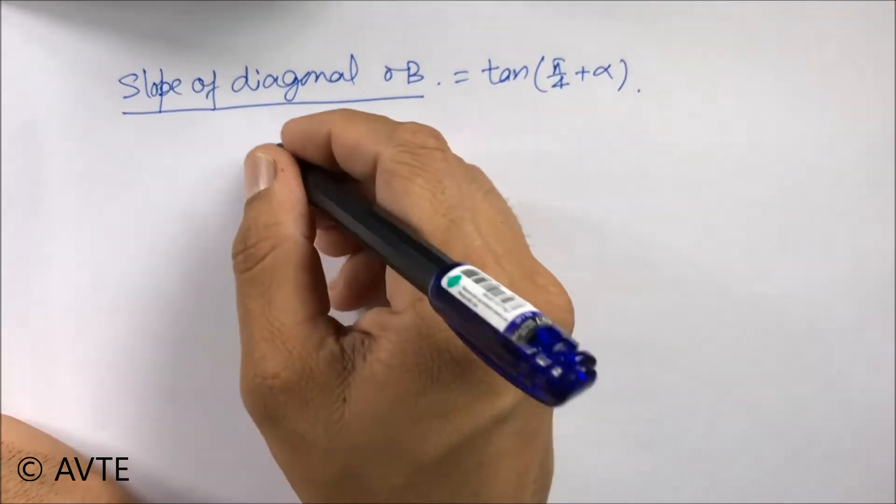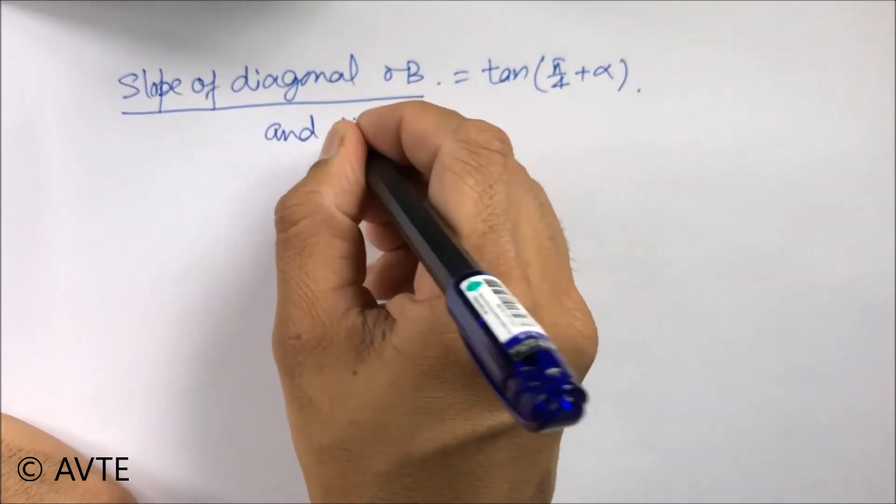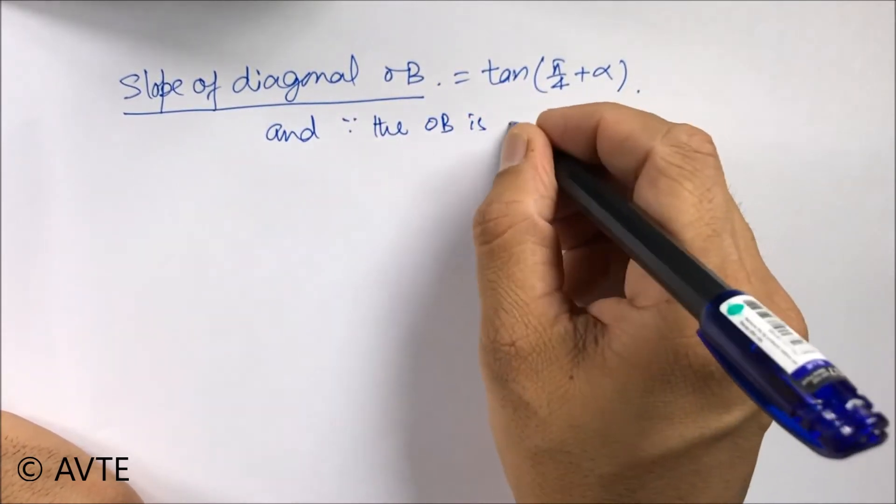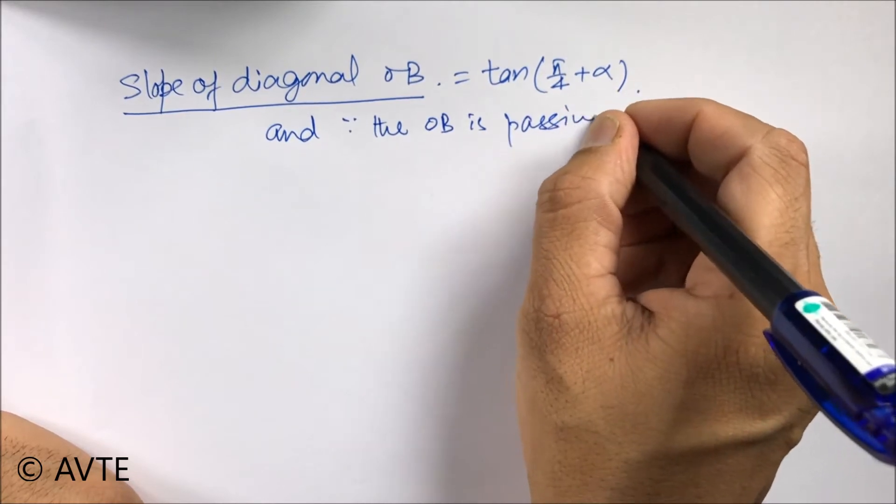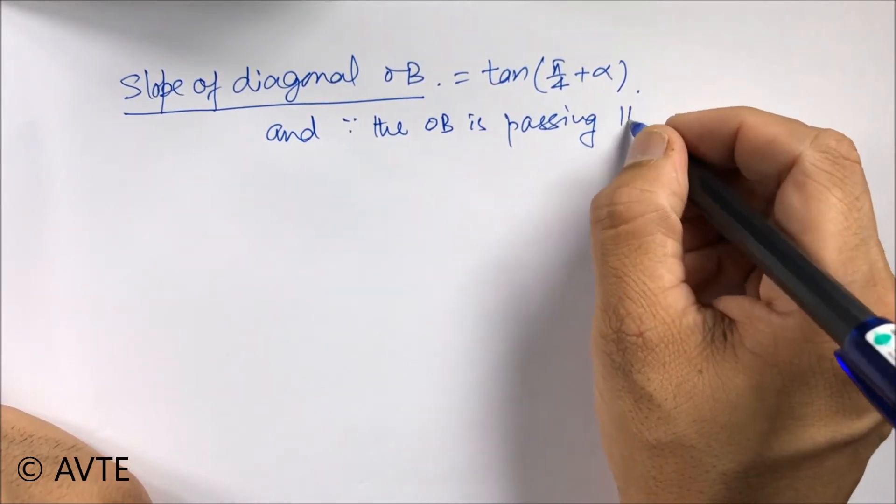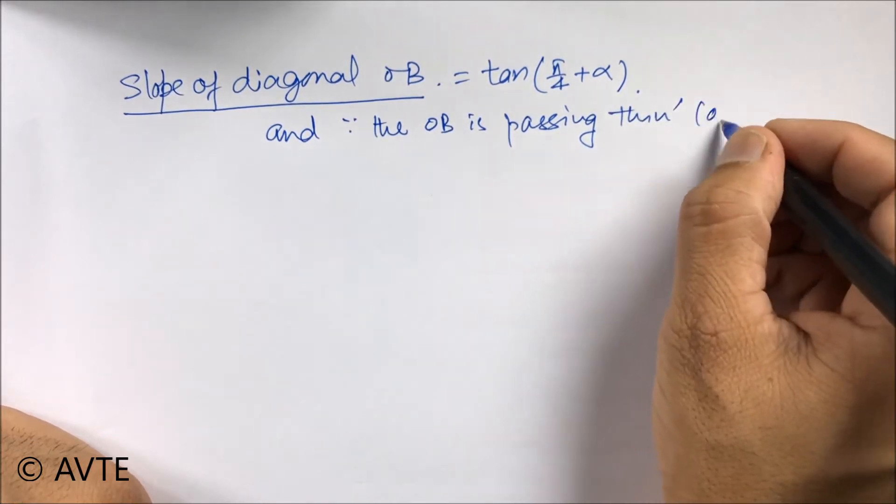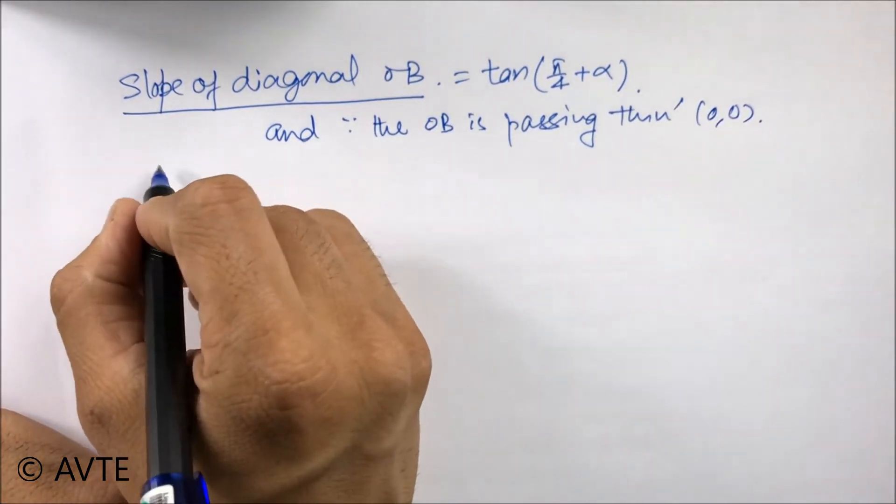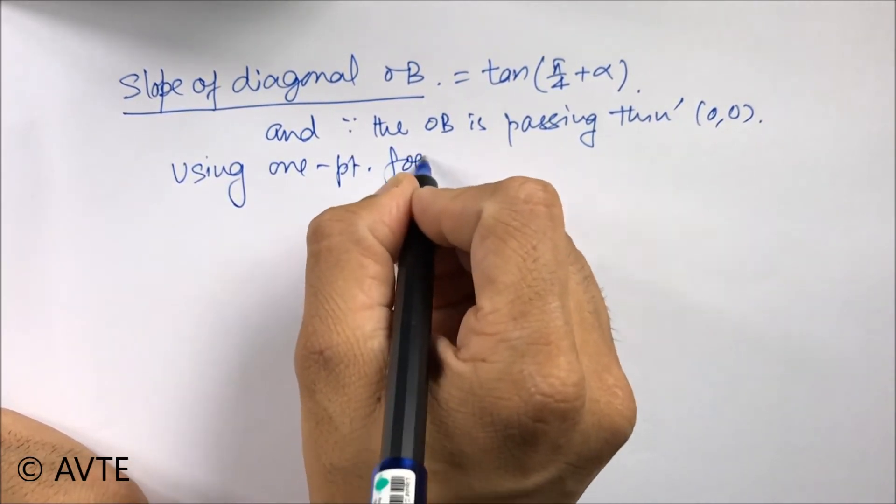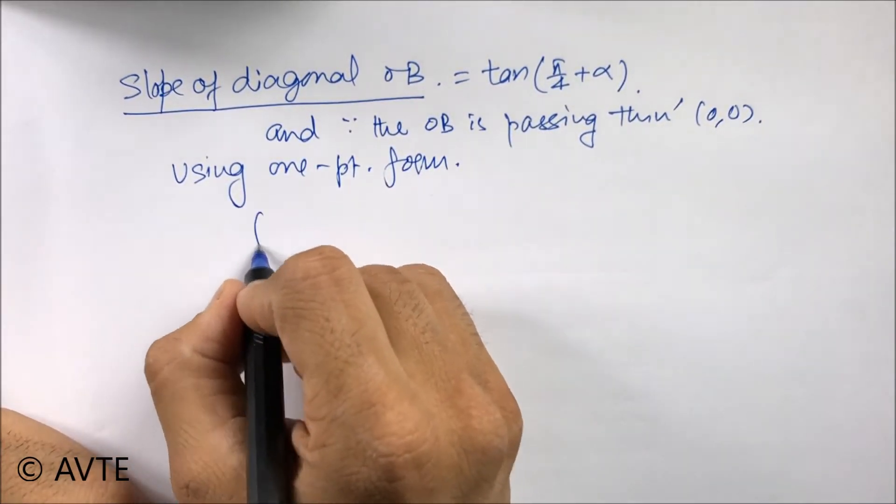Because OB is passing through obviously O which is origin, OB is passing through 0 comma 0, so its equation will be using one point form.